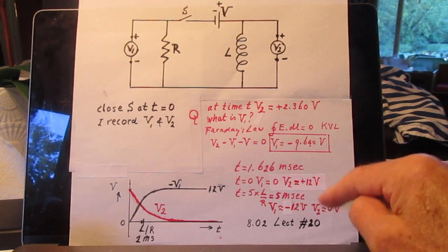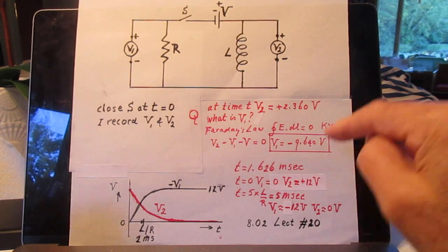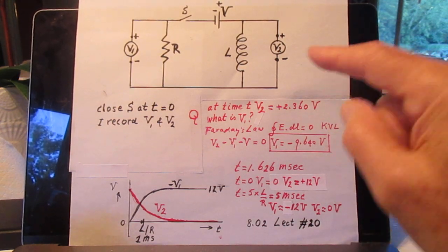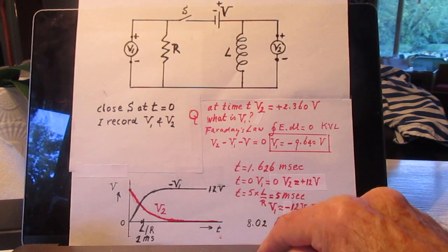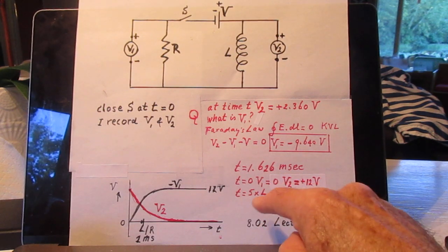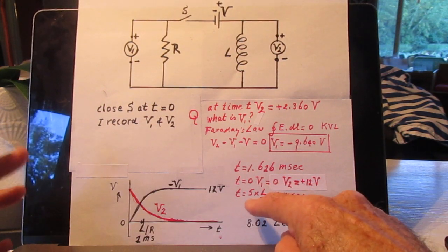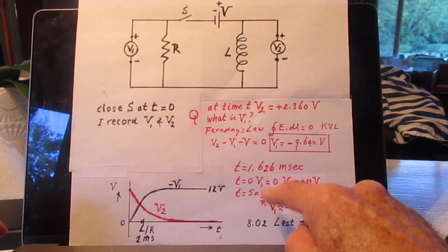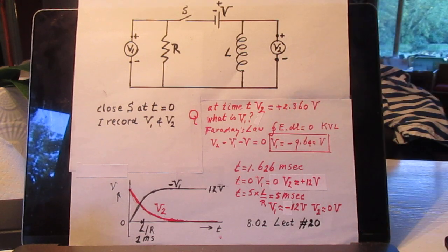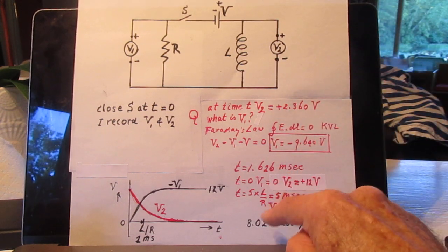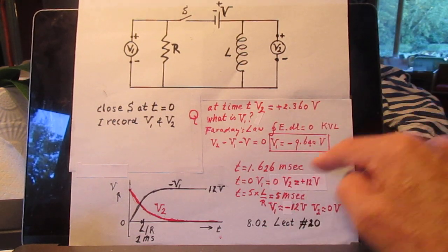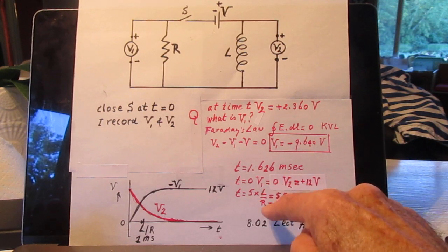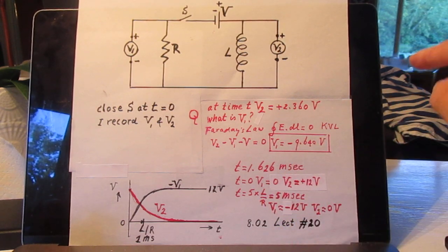What you can see, though, very easily, is the situation at T0 and the situation, say, 5 times L over R. L over R is called the time constant of this circuit. L over R is 1 millisecond. Yes, the units of L over R are really seconds.